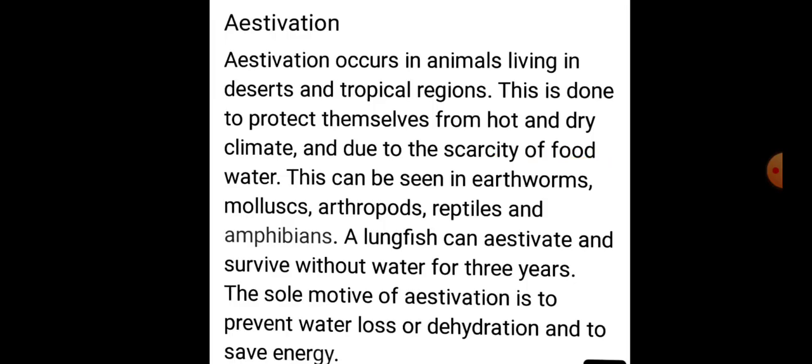A second type of dormancy is known as estivation. Estivation occurs in animals living in deserts and tropical regions, done to protect themselves from hot and dry climate and due to scarcity of food and water. It can be seen in earthworms, molluscs, arthropods, reptiles and amphibians. A lungfish can estivate and survive without water for 3 years. The sole motive of estivation is to prevent water loss or dehydration and to save energy.